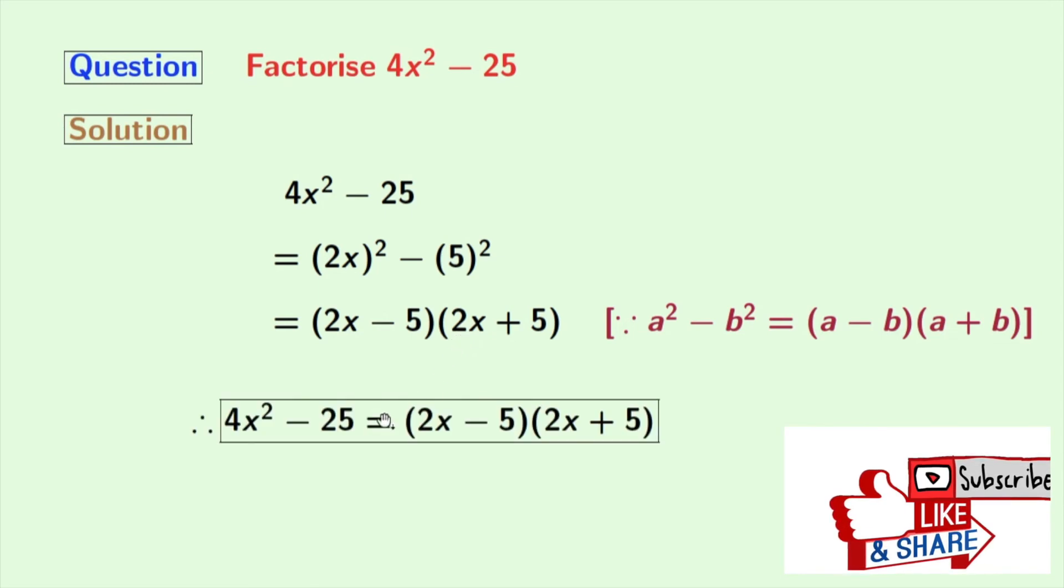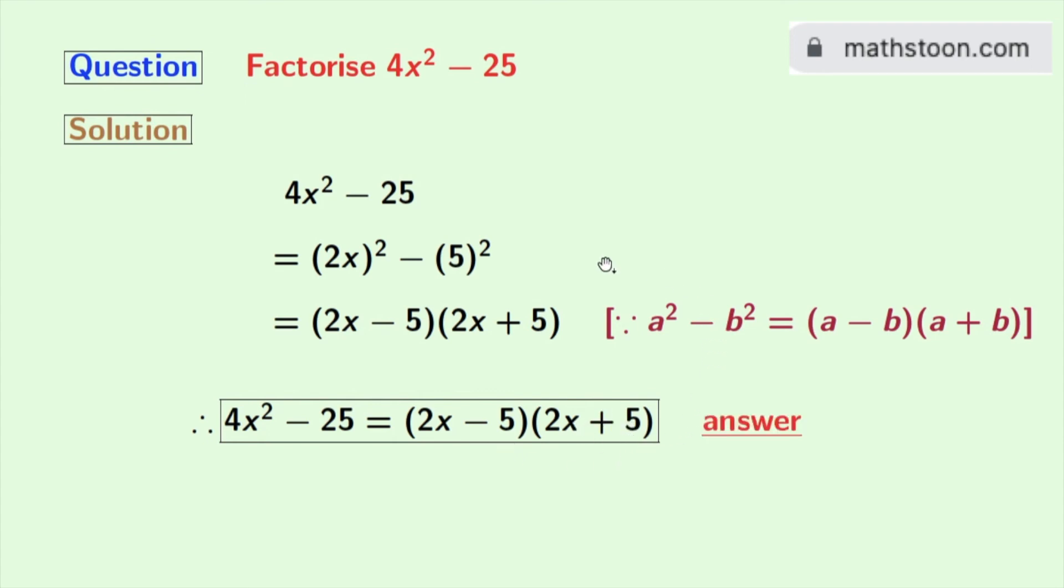So finally, we get 4x² minus 25 equals (2x minus 5)(2x plus 5). This is our desired factorization.